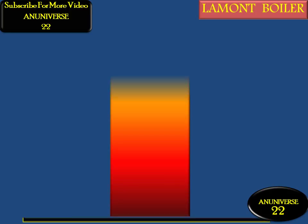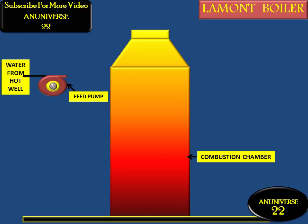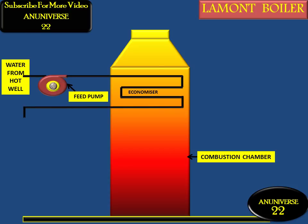Now we will discuss the main components of the LaMont boiler. This is the combustion chamber. Generally the furnace in the LaMont boiler is vertical, and its main function is to burn the fuel. This is the feed pump, used to supply water to the economizer, which preheats the water by using the remaining heat of the combustion gases.